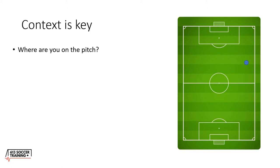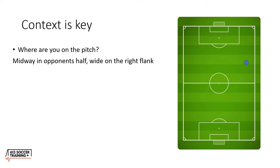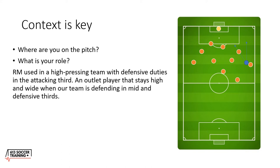First off, context is key. Where are you on the pitch? I've put a little dot on the pitch to show where the player is — they're midway in the opponent's half, wide on the right flank. That's probably the simplest thing most players will easily recognise, and most players will use decision-making processes focused primarily on this.